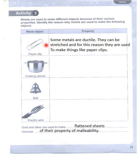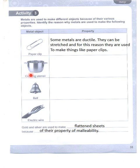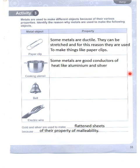Identify metals and their properties. This metal is ductile. Some metals are good conductors of heat, like aluminum and silver. Cooking utensils are made from them because of this property.